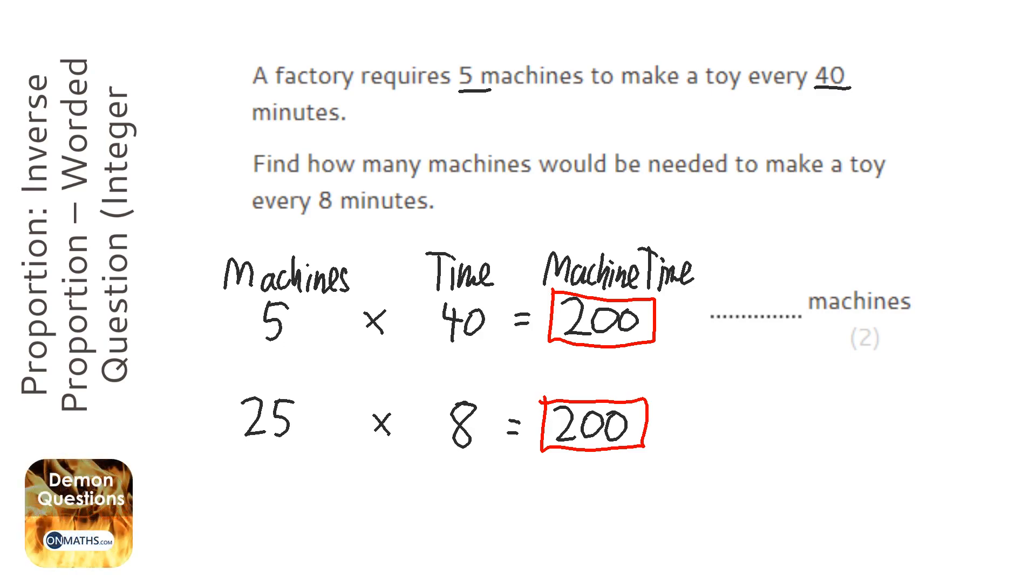So let's check that. 25 times 8 is 200, so it works. Now that is the answer: we would take 25 machines.